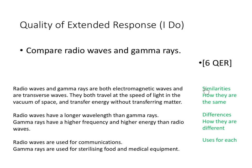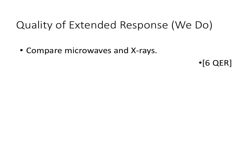A six-mark answer covers similarities — things true of all electromagnetic waves — and differences, comparing radio waves specifically against gamma rays. You can't just say 'radio waves have a longer wavelength' without saying longer than what. Then include what each type is used for to complete the six marks.